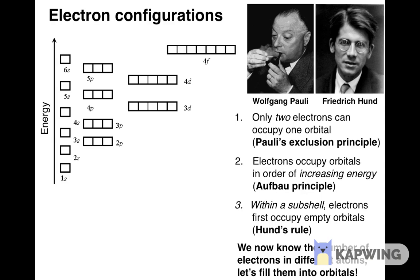Let's start by considering hydrogen, atomic number 1. Its neutral atoms only have one electron, so we don't have to worry about Pauli's principle here. According to the Aufbau principle, this electron will occupy the orbital where it has the lowest energy — the only orbital in the 1s subshell. The electron configuration for hydrogen is written as 1s¹, where the superscript indicates the number of electrons in that subshell.